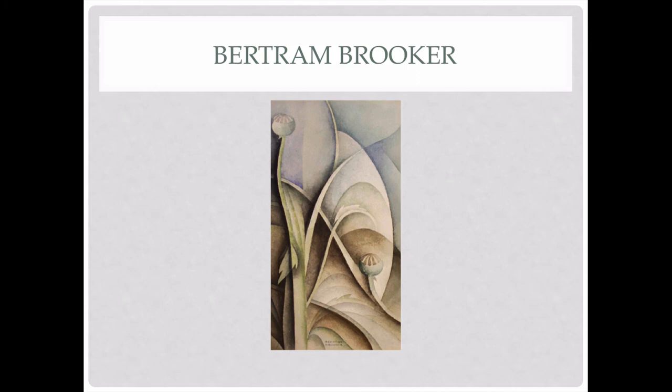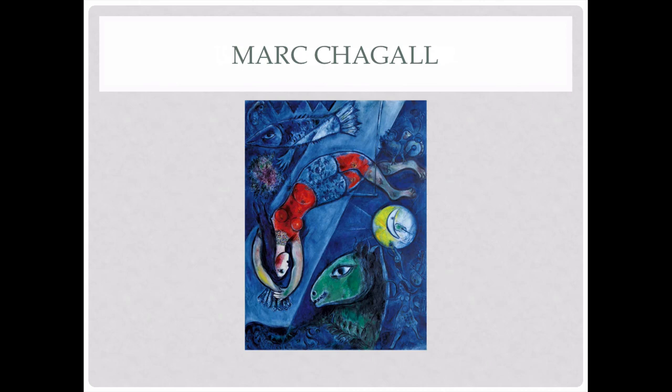Brooker does the same thing but in a different style. Notice how style is not the important part — style is only the background that you use for the composition. All kinds of artists with different styles use the composition for their own style. Brooker has leaning verticals and leaning horizontals that create an X. Chagall is the same thing — you have diagonals and vertical elements all broken up to create that X.